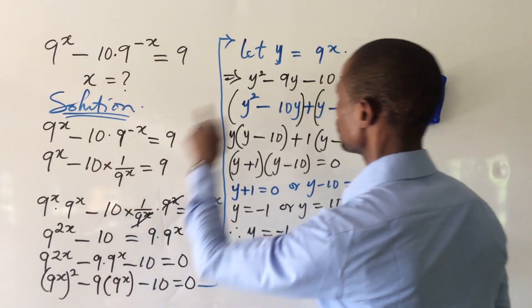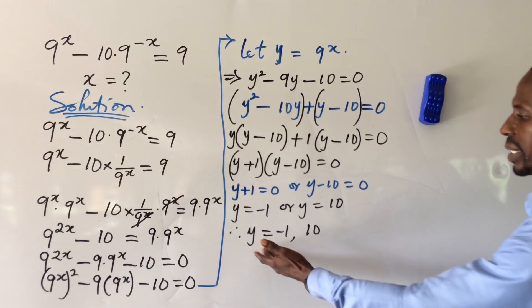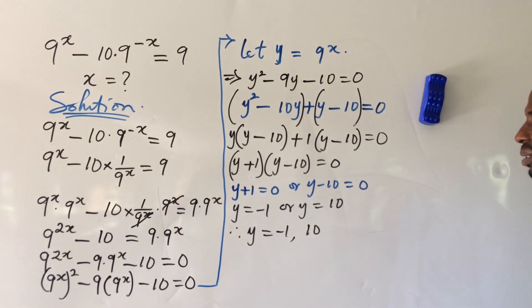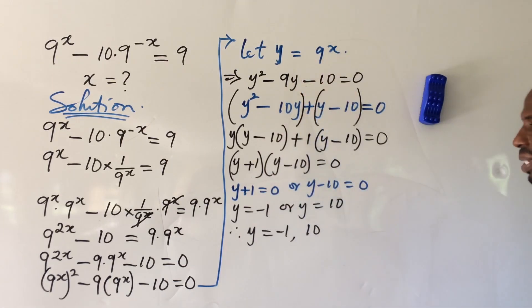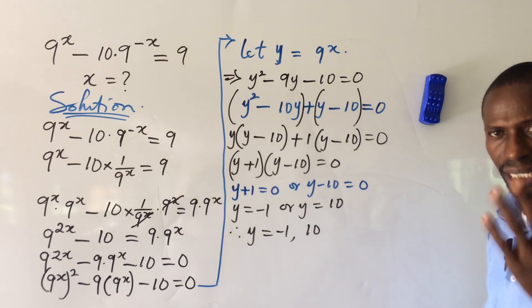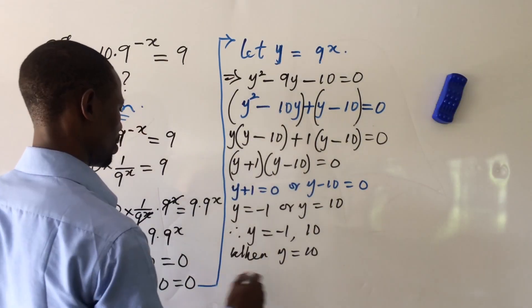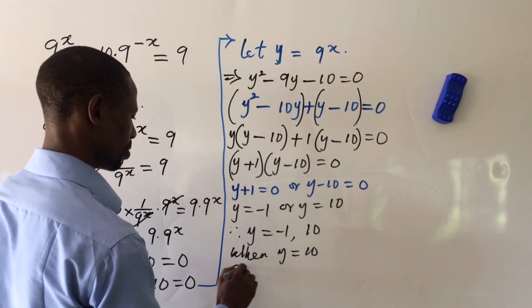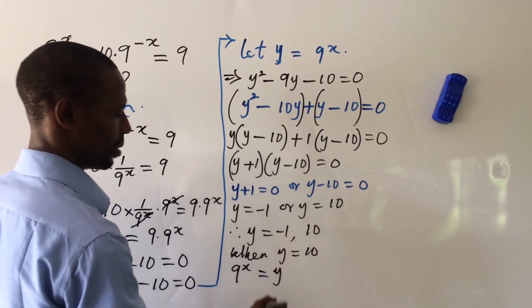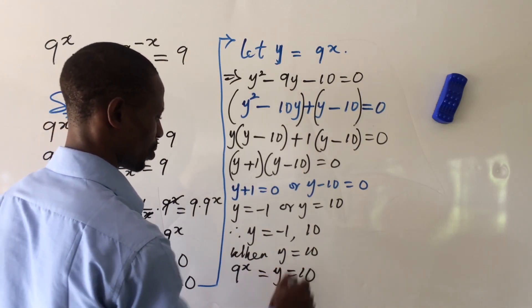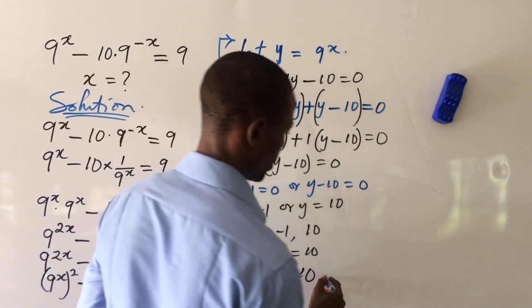We now back-substitute using our definition y equals 9^x. For Case 1, y equals minus 1: we would need 9^x equals minus 1, which gives no real solution. For Case 2, y equals 10: we need 9^x equals 10.